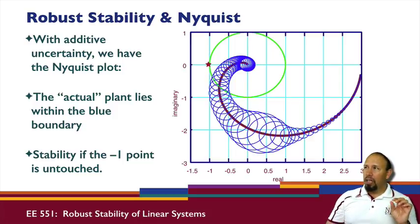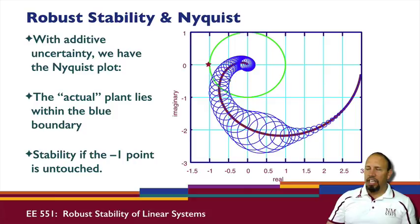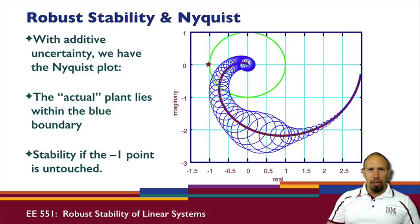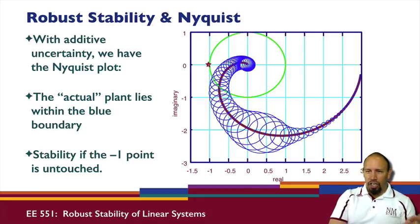The system might actually still be stable even if the band touches the minus one point, because our actual uncertainty might lie on the other side of the band, giving quite a distance from the critical point. Our actual uncertainty may be different than the worst-case uncertainty within the entire set. What we know for sure is that if the band does not touch that point, then our system is stable regardless of where the uncertainty lies.